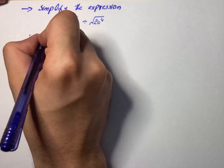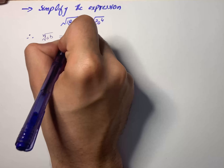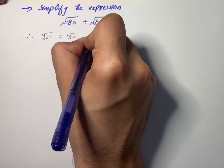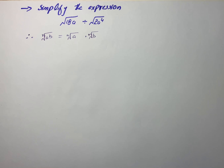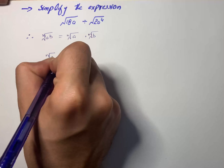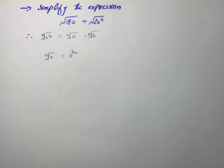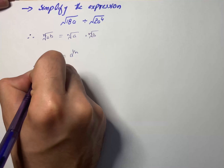Here we have an expression to solve. The formula we're going to use is the product rule of radicals: the nth root of a times b equals the nth root of a times the nth root of b, where n is a positive integer and a and b are real numbers. The relation between radical and rational exponent notation is expressed as: the nth root of a equals a raised to the power of 1 over n, where a is the radicand and n is the index of the radical.